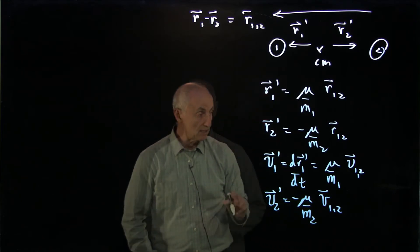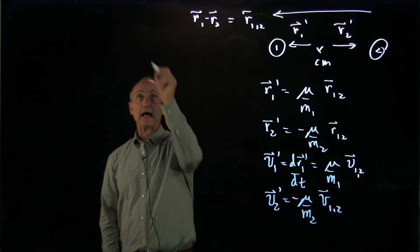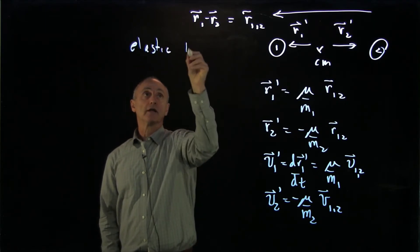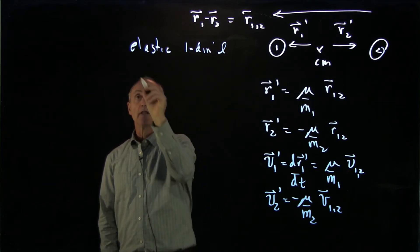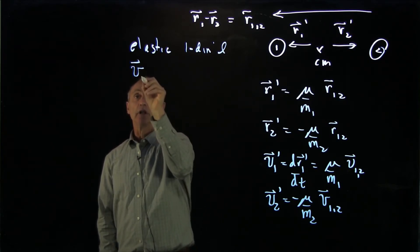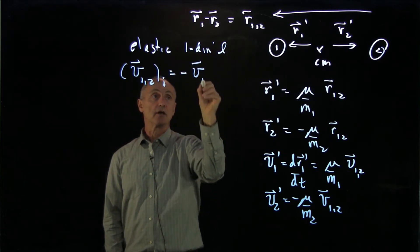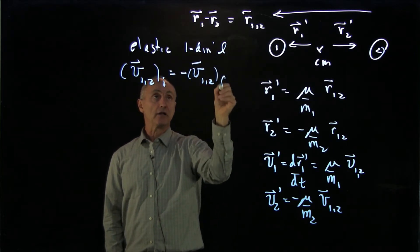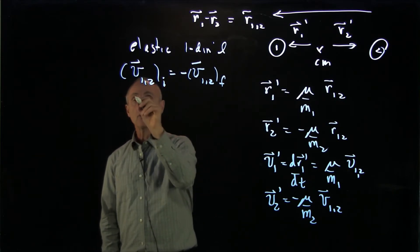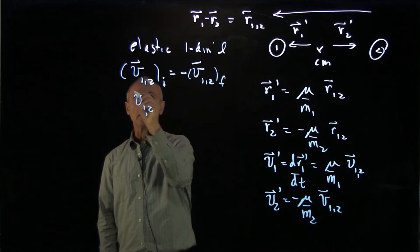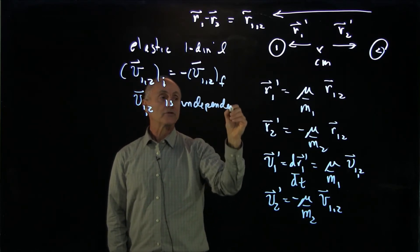So the significance of this result is that when we looked at an elastic one dimensional collision, we already have the result that the relative velocity v12 initial is minus the final relative velocity. And we also know from what we saw that the relative velocity is independent of the reference frame.